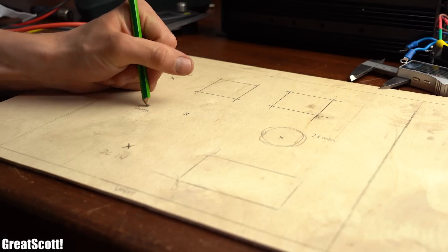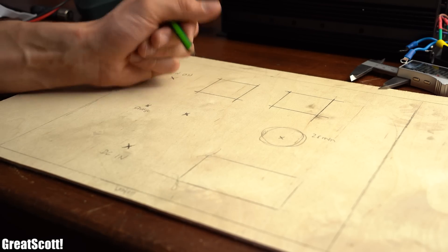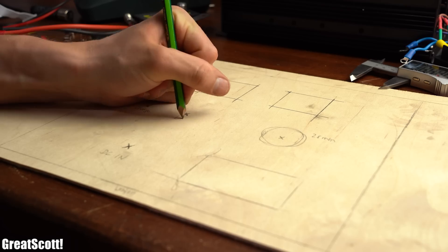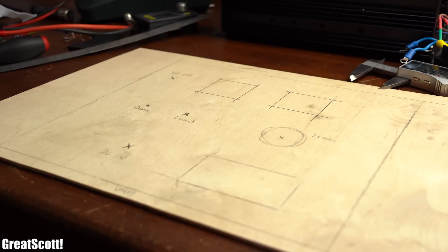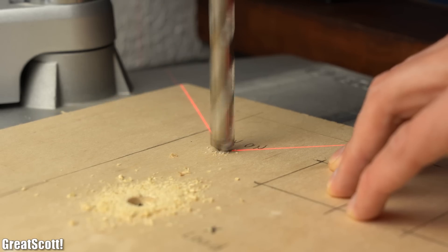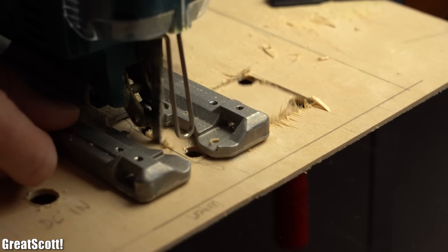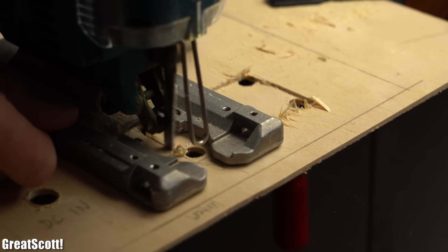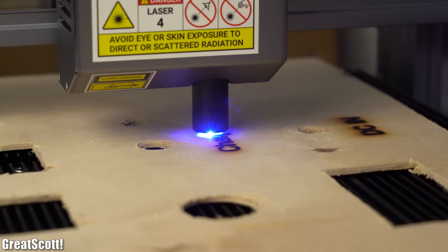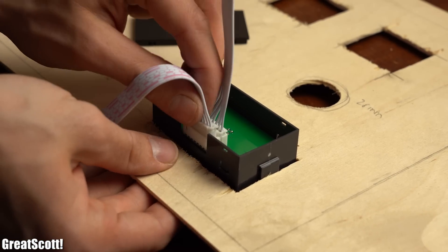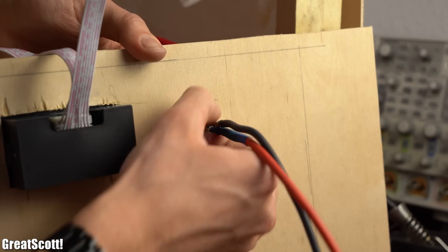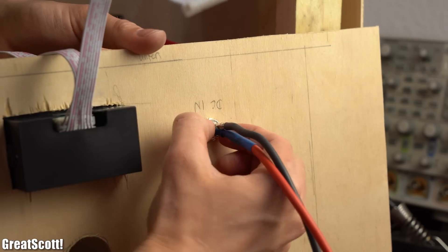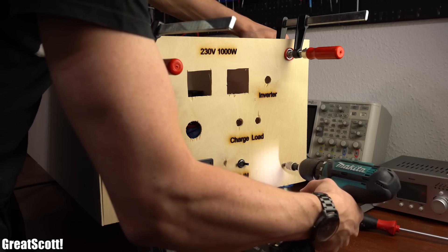And with that out of the way I marked the spots for all of the required control components on the remaining short side piece, created all of the cutouts with a drill and a jigsaw and just because I can I also used my laser engraver to give it all some nice labels. Next I pushed the LCD in place and secured the DC input jack to the panel before screwing it to the enclosure.